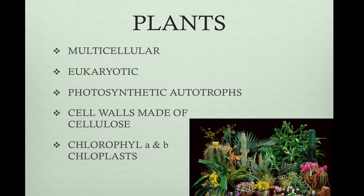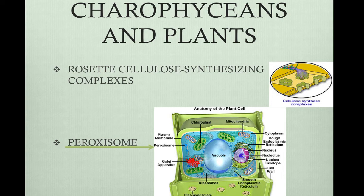Plants are classified as being multicellular, eukaryotic, photosynthetic autotrophs. They have cell walls made of cellulose, and they contain chlorophyll A and B in their chloroplasts. Other organisms share these characteristics, but two structures are only shared between land plants and charophyceans. Charophyceans were the green algae most closely related to land plants. The two homologous structures are rosette cellulose synthesizing complexes and peroxisomes.